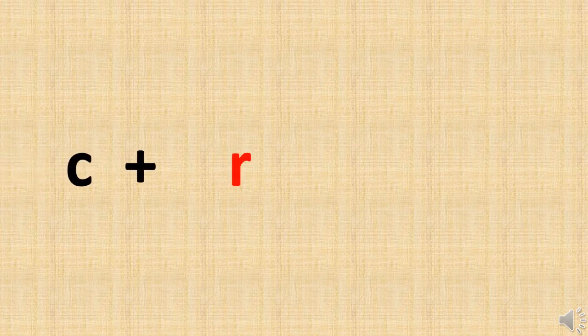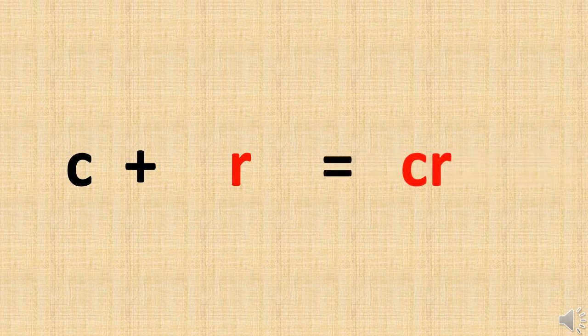Now I am going to replace letter B with letter C, while keeping letter R in the same place. What is the phonic sound of letter C? K. Very good. So K and R makes a new sound — that is kr. K and R makes kr. The new sound we have got is kr.